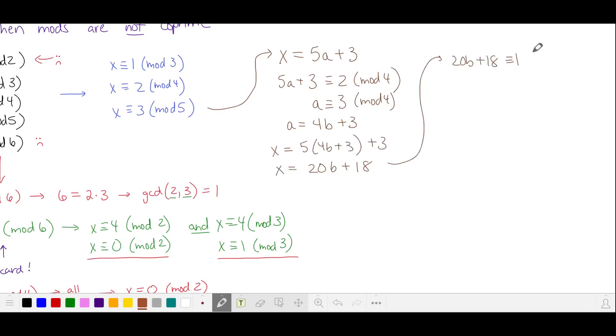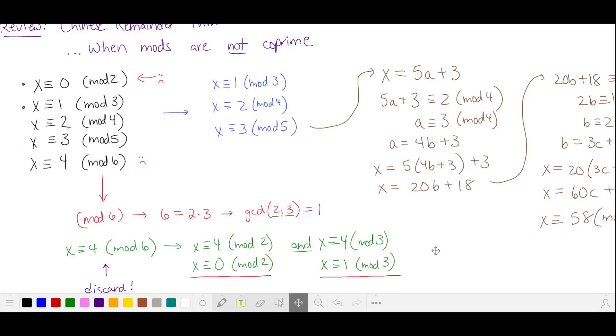This is also equivalent to one in mod three, so b is two more than a multiple of three. And we substitute for x, simplify, and x is equivalent to 58 mod 60. This solves this system of five equivalences.